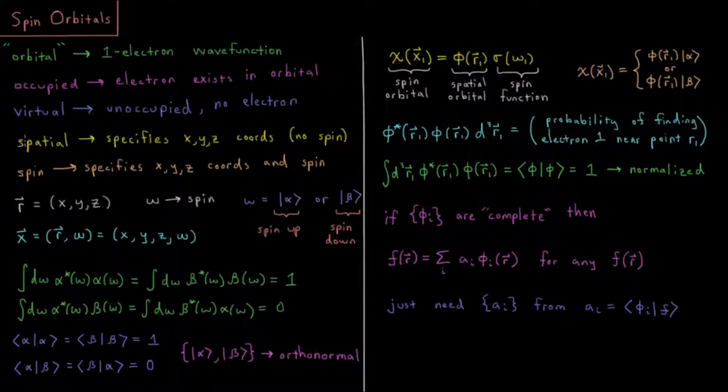An orbital would be a spatial orbital if we are specifying the x, y, and z Cartesian coordinates of the orbital, not indicating anything about the spin, whether that's spin up or spin down. And a spin orbital would specify both the x, y, and z Cartesian coordinates and the spin of whatever electron is within the orbital.